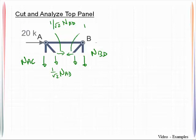And then likewise for this 1 over square root of 2 NBC, 1 over square root of 2 NBC. That's our free body diagram.